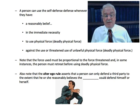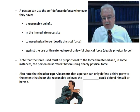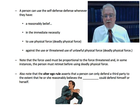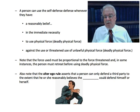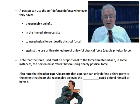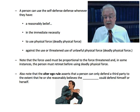A person can use the self-defense defense whenever they have a reasonable belief in the immediate necessity to use physical force or deadly physical force against the use or threatened use of unlawful physical force or deadly physical force against them. Note that the force used must be proportional to the force threatened, and in some instances the person must retreat before using deadly physical force. Also note that the alter ego rule asserts that a person can only defend a third party to the extent that he or she reasonably believes the third party could defend himself or herself.